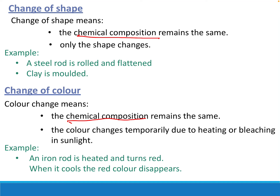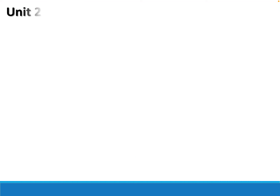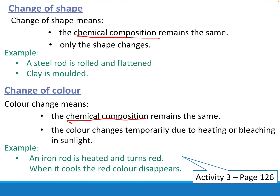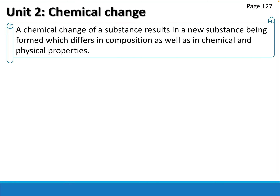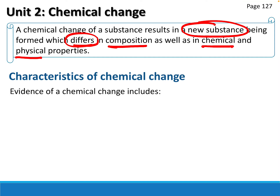In your textbooks you really need to look at Activity 3 on page 123. Now we're going to look at chemical change. A chemical change of a substance results in a new substance being formed which differs in composition as well as chemical and physical properties - it's a completely new thing.